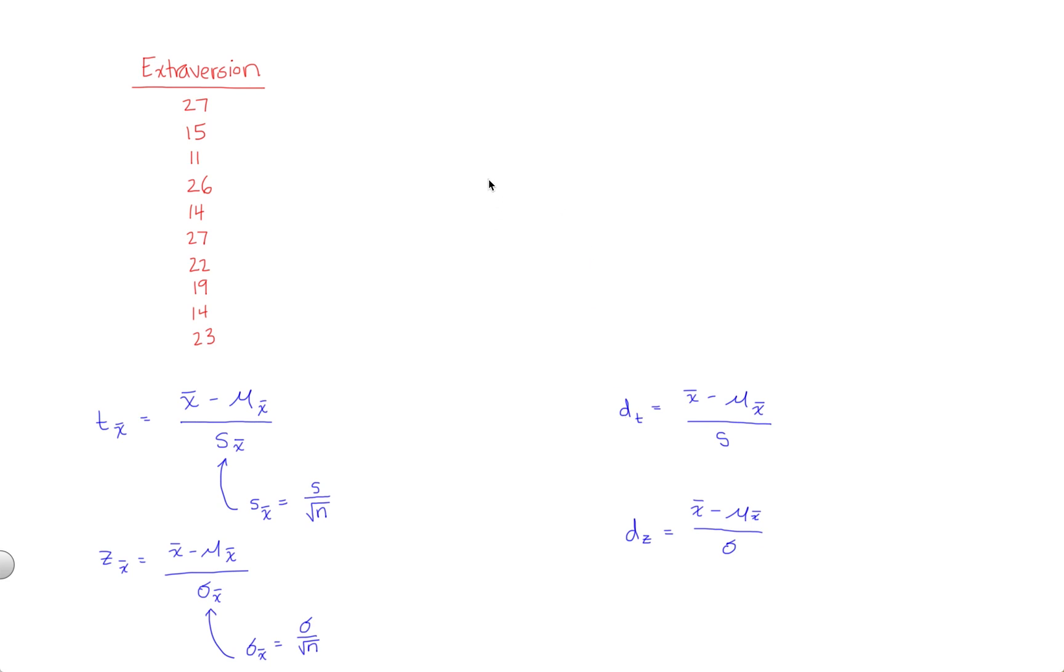Before we do, I want to reiterate the differences that I went over in the last video between the one-sample z-test and its effect size and the one-sample t-test and its effect size. You'll see a lot of similarities between all of these formulas. The numerators are the same regardless. All four formulas, if you're doing a hypothesis test or an effect size, you're always going to take the sample mean minus the population mean that you're comparing against for all of these.